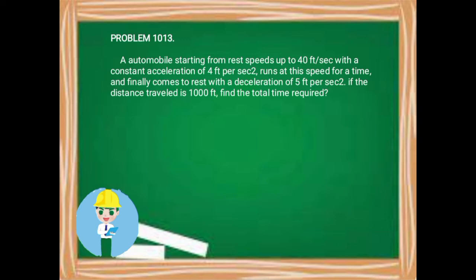Another problem: an automobile starting from rest speeds up to 40 feet per second with a constant acceleration of 4 feet per second squared, runs at this speed for a time, and finally comes to rest with a deceleration of 5 feet per second squared. If the total distance traveled is 1000 feet, find the total time required.